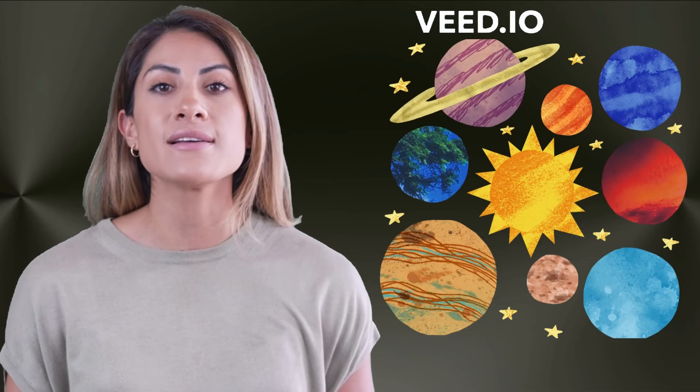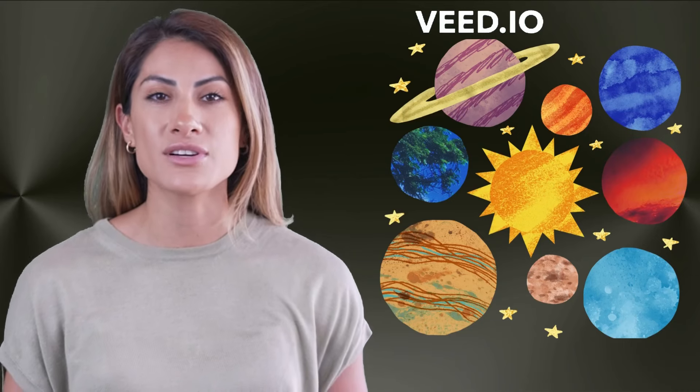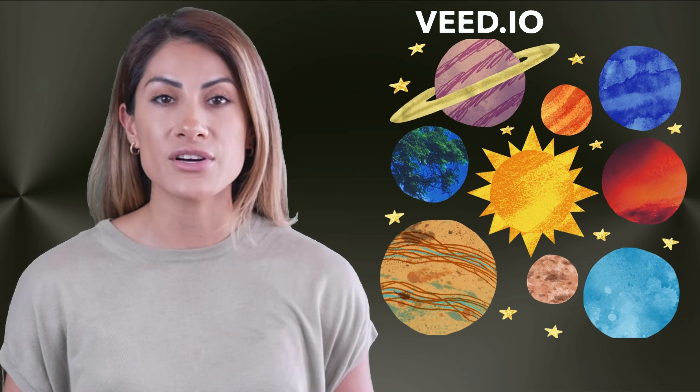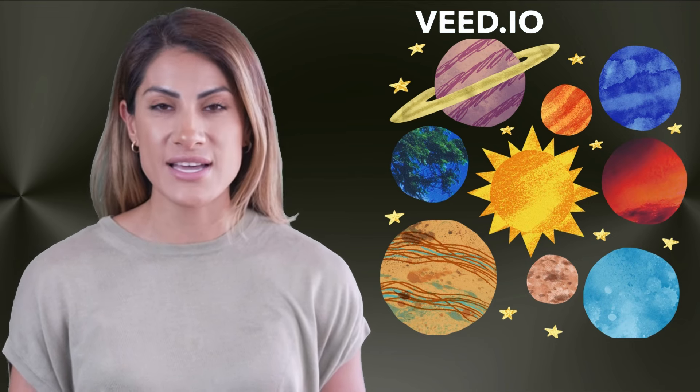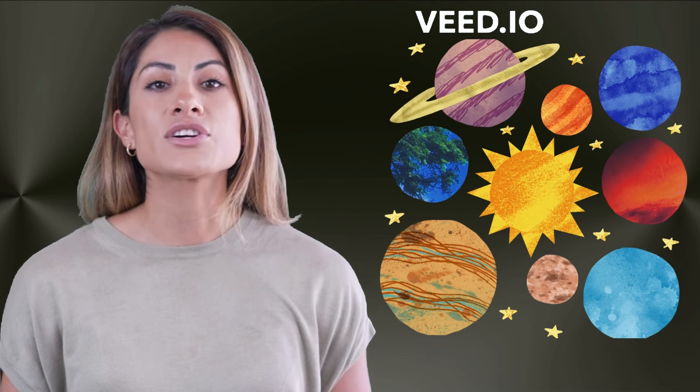Come little astronauts, let's take a flight through the solar system shining bright. We'll start with Mercury so close to the sun, a tiny rocky world where our journey's begun.